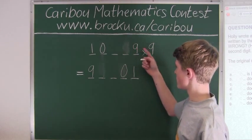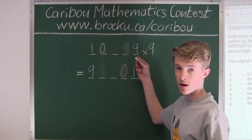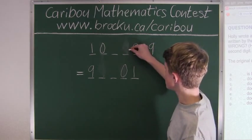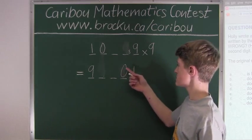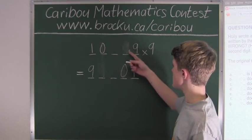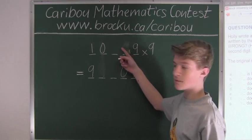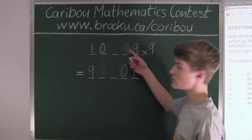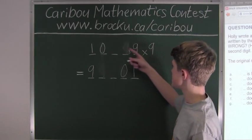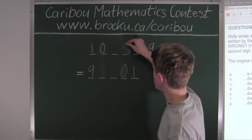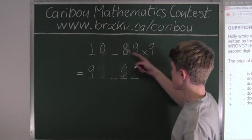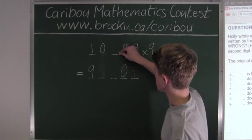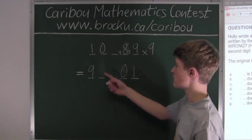Now looking at the middle digit: 9 times 9 is 81, so we put down 1 with a carryover of 8. Since we have a carryover of 8 and a 0 in that column, it is like having 10. So 10 minus 8 equals 2, meaning 9 times this digit must have 2 in the ones column. The only number satisfying that condition is 8, because 9 times 8 is 72. So 72 plus 8 is 80 — we put 0 and carry 8. We also know that 8 must appear in the reversed number.